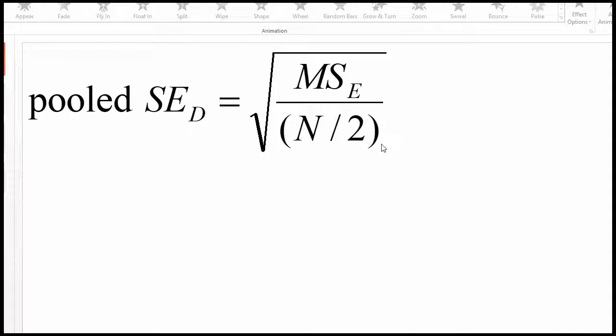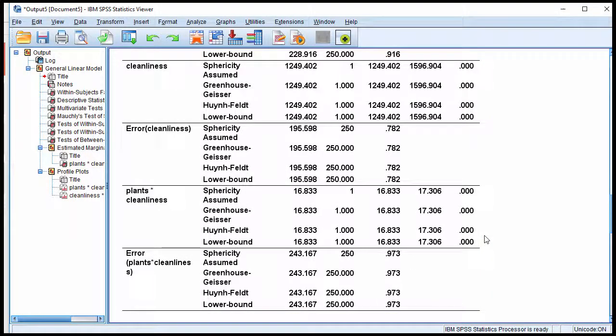So the formula here for the standard error of the difference between related means, that's a pooled standard error, is based on the mean square error that you can derive from the interaction term in the within subjects factorial ANOVA.